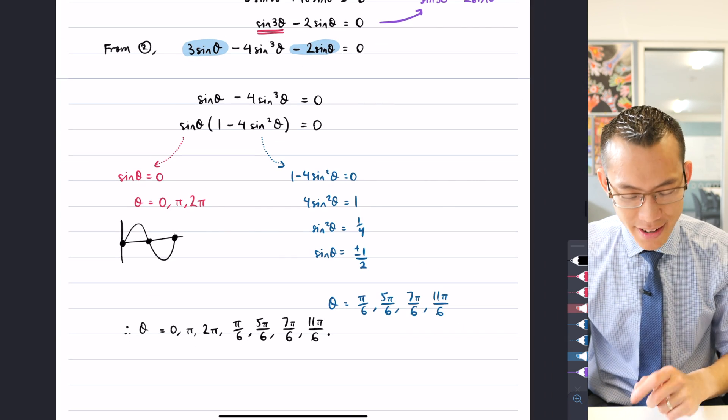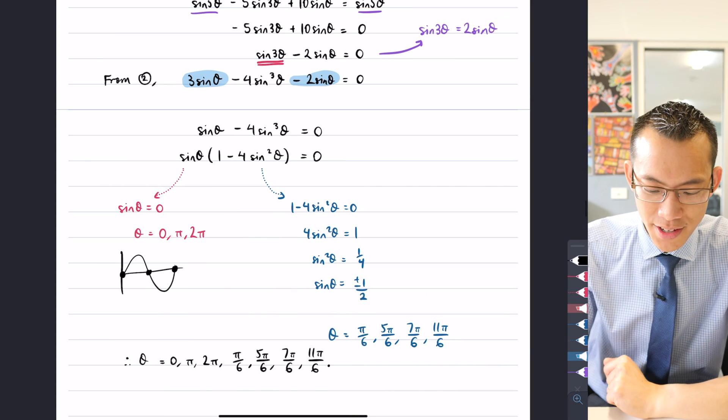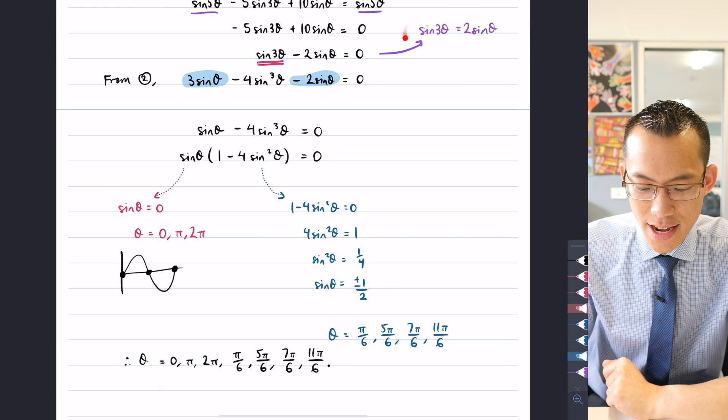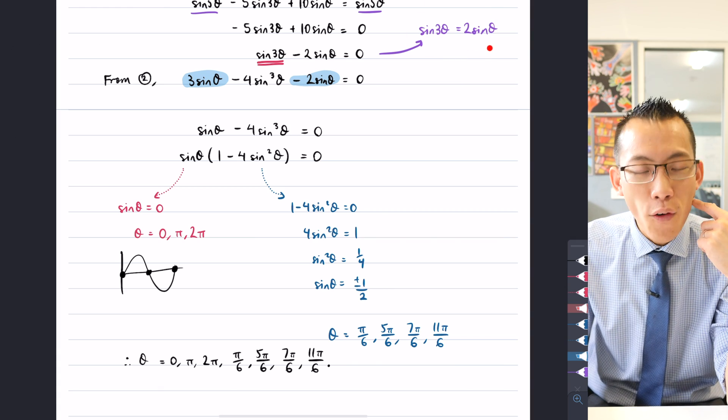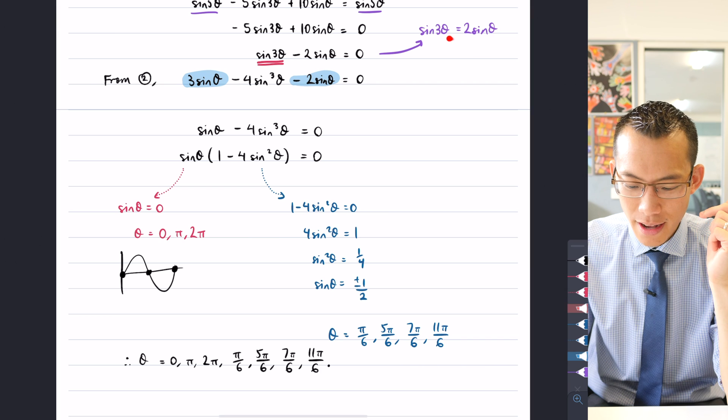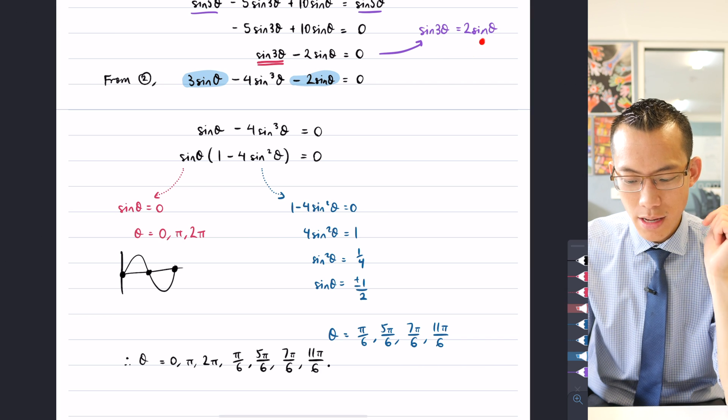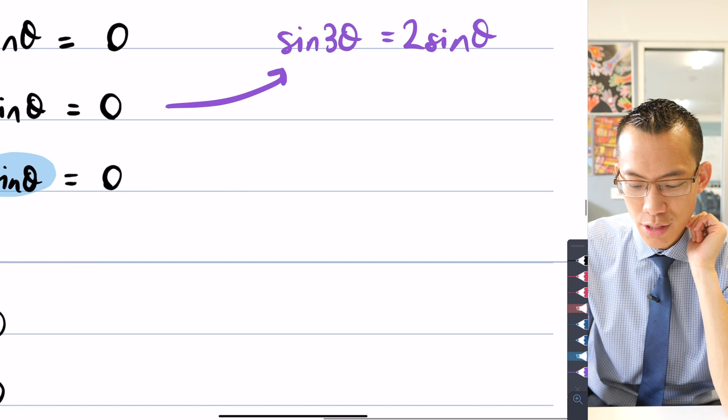So this thing has seven solutions. That's a bit weird, but it actually shouldn't surprise us all that much when we go back to this idea up here and think about what this is going to look like visually.